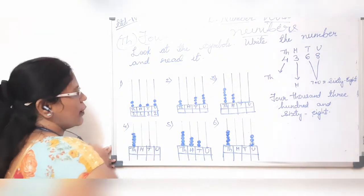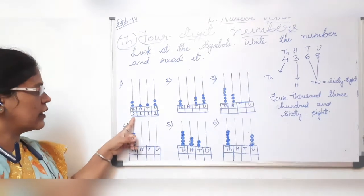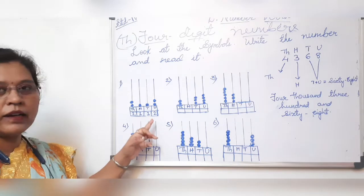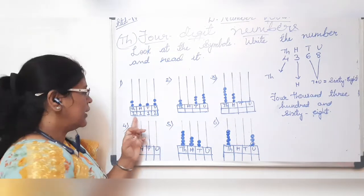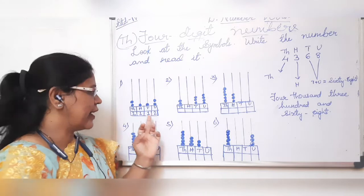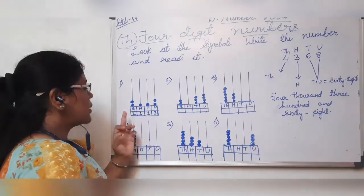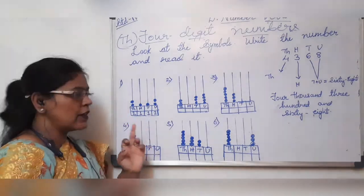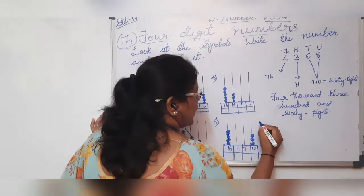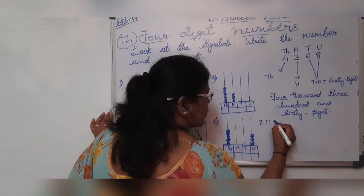On the units place there are two beads. On the hundreds place, one bead. On the thousands place, two beads. So now read this number — it is two thousand one hundred and twelve. What is this number? It is two thousand one hundred and twelve. We will write the number: 2,112.